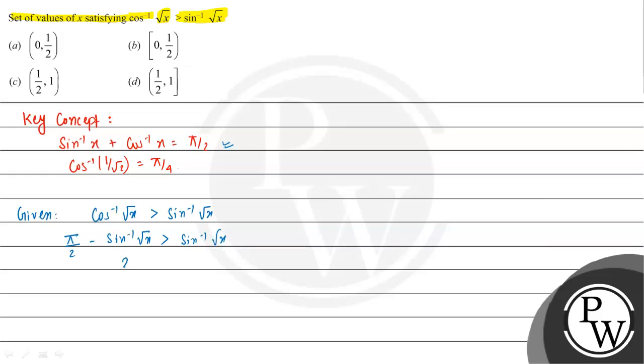So we can say that 2 sin inverse root x will be less than pi by 2, or sin inverse root x will be less than pi by 4.